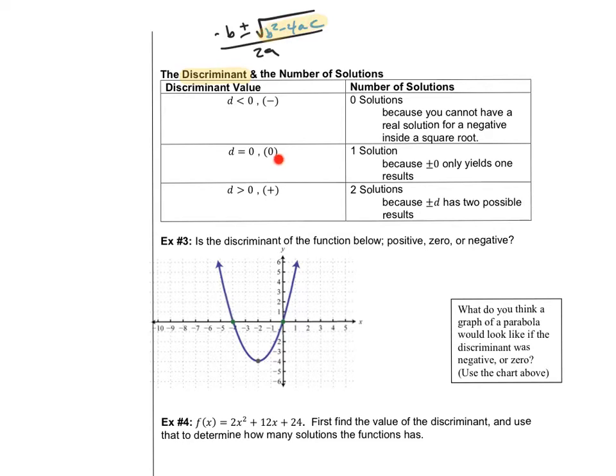If this number ends up being 0, then there's exactly one solution. And that's because if you had something and you plus or minus 0, you'd get the same thing. For example, 5 plus 0 is the same thing as 5 minus 0. So there's only one solution.